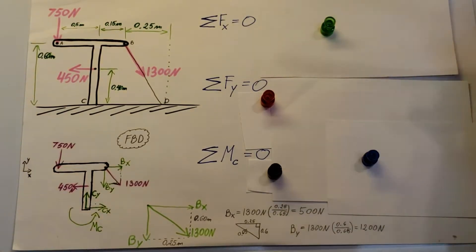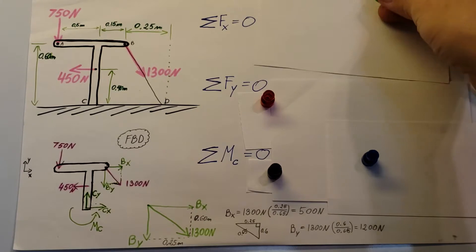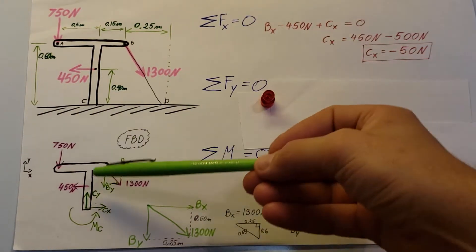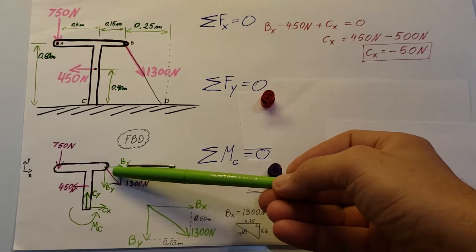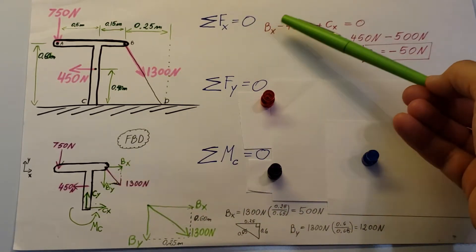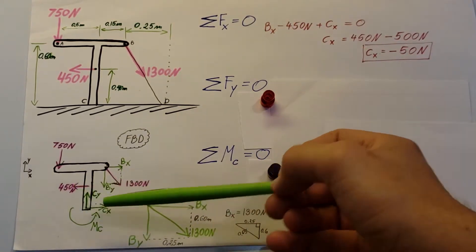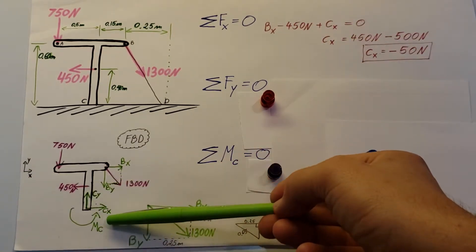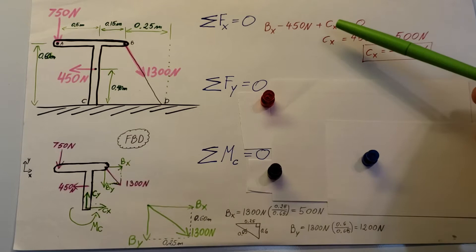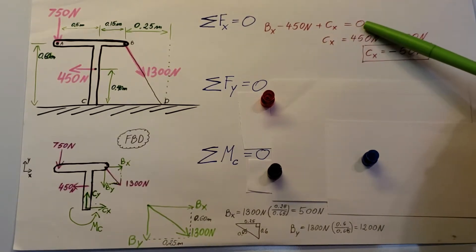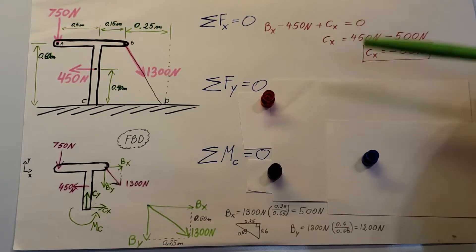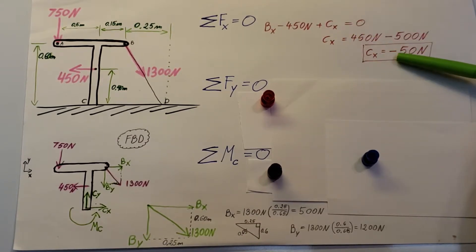Now back to the sum of forces in the x direction: Bx is in the positive direction, minus 450 in the negative direction, plus Cx assumed positive, equals zero. Solving, Cx equals negative 50 newtons.